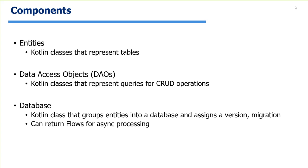There are three main types of components you'll work with in Room. Entities are classes that represent a table inside the database, annotated with @Entity. Data Access Objects are your CRUD queries — create, read, update, delete — annotated with @DAO. Database is a class that groups together which entities belong to your database, creates the tables, and lets you set a version and migration strategies. The DAO can also return flows for asynchronous processing.